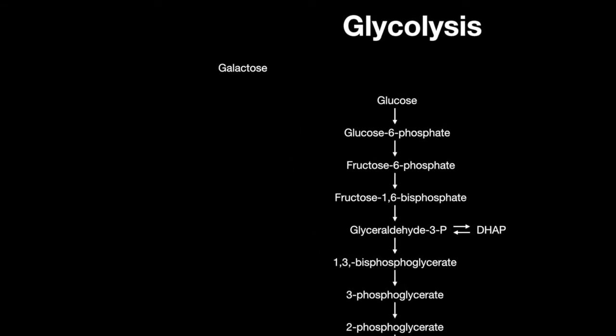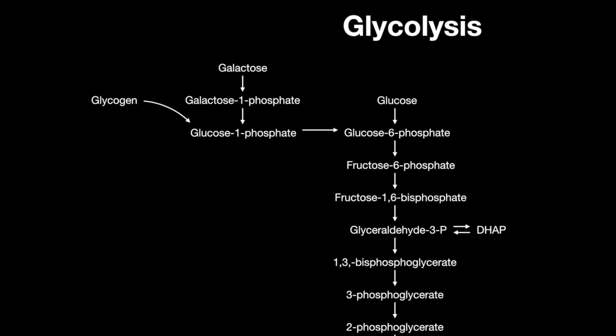Galactose can enter glycolysis by becoming galactose 1-phosphate, then glucose 1-phosphate, then finally glucose 6-phosphate. Glycogen follows a similar pathway — individual glucose molecules in glycogen become glucose 1-phosphate, which also enters as glucose 6-phosphate.